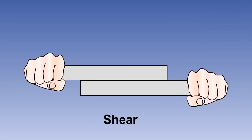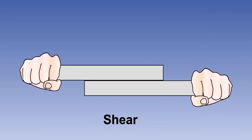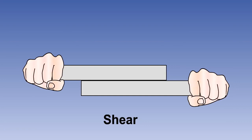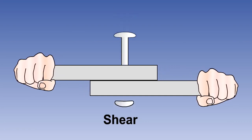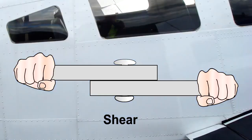Shear is a force which tends to slide one face of the material over an adjacent face. Riveted joints are designed to resist shear forces. Rivets are being used in this picture to fasten the fuselage skin to the frame. In modern aircraft they are being replaced by adhesive bonding processes.